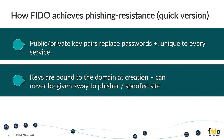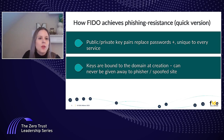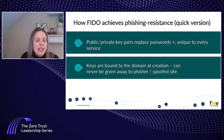How does the FIDO approach actually achieve phishing resistance? There are two major things. First, replacing the password with public-private key pairs that are unique to every service — so the user cannot use and reuse credentials across sites. The truly unique component of FIDO is that the keys are bound to the domain at creation. So even if someone really wanted to provide credentials to a spoofed site, it will simply reject that sign-in completely because that is not the domain at which the key was created. That is a big part of why FIDO is phishing-resistant.